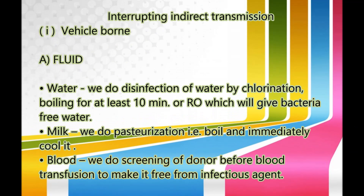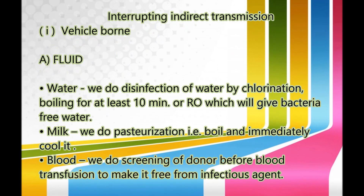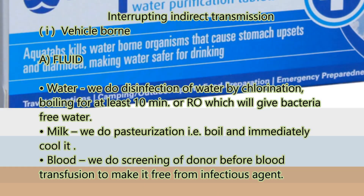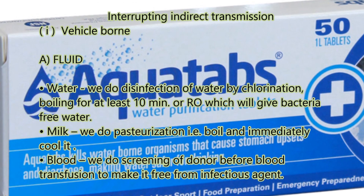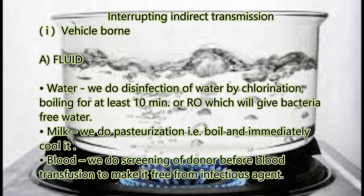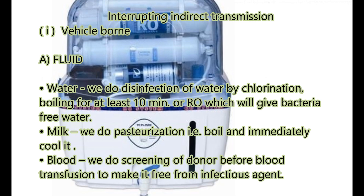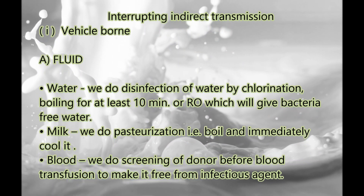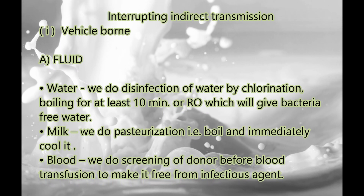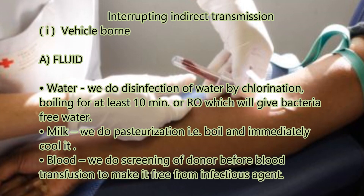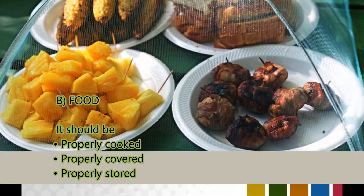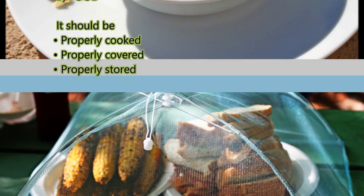Interrupting indirect transmission — Vehicle-borne: This includes fluid and food. Under fluid, we do disinfection of water by chlorination, by boiling for 10 minutes, or by using RO, which gives bacteria-free water. For milk, we do pasteurization — boiling and immediately cooling it. For blood, we do screening of donors before blood transfusion. For food, it should be properly cooked, properly covered, and properly sealed.